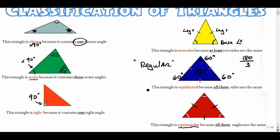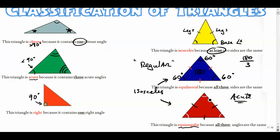This equilateral triangle is actually also an isosceles triangle, because look at the definition of isosceles: at least two sides. Which means that if all three sides are the same, then it's isosceles as well. And it's also acute, because all three angles are less than 90. So if you're equilateral, then you're equiangular, and you're isosceles, and you're acute, and you're regular — you have five names.